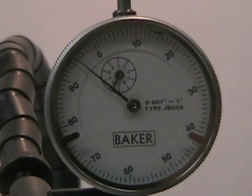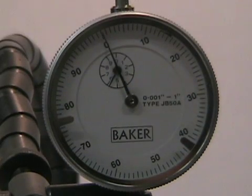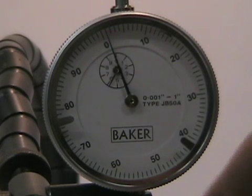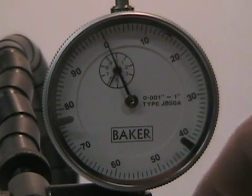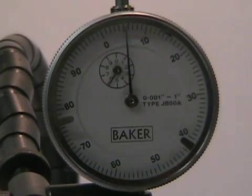Stop when the needle moves to the maximum position to the left and rotate the bezel so the zero aligns with the pointer. Continue rotating the part until the pointer gets to the maximum position on the right. The total movement between the left and right measurements is how much run out or distortion the part has.